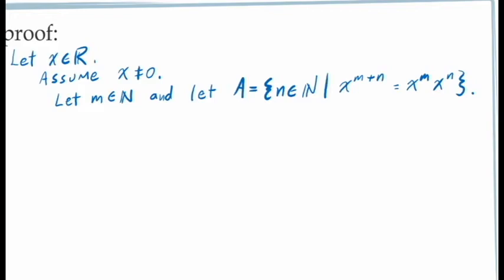Looking at the left-hand side, if n has a value of 1, this gives us the expression x to the exponent m plus 1. We know from the definition of natural number exponents that x to the exponent m plus 1 is equal to x to the exponent m times x. And x is of course x to the exponent 1. And so this gives us x to the exponent m times x to the exponent n when n has a value of 1. This shows that our equation holds when n has a value of 1, and so 1 is an element in the set A.